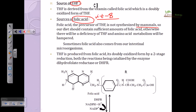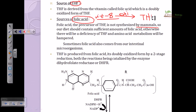THF is derived from vitamin B through a two-stage reduction. Double oxidation of vitamin B leads to the formation of tetrahydrofolate. This double reduction is a really important step in the biosynthesis of THF.